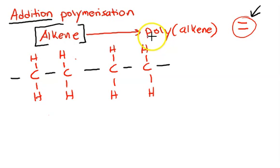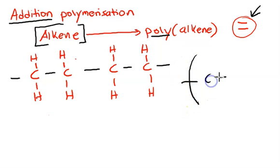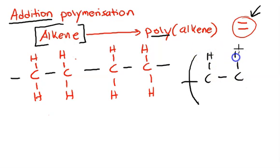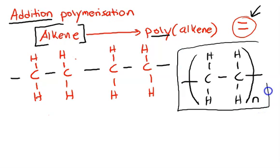In terms of the polymer, we call it polyethene. We can write it in this way, putting a small 'n' over here which stands for the repeating unit of polyethene.